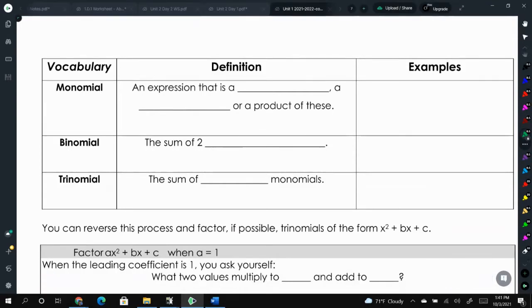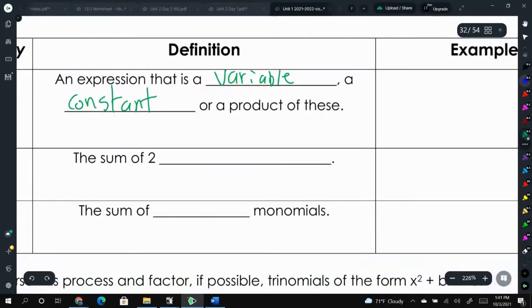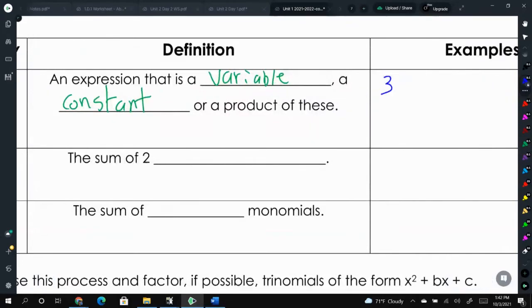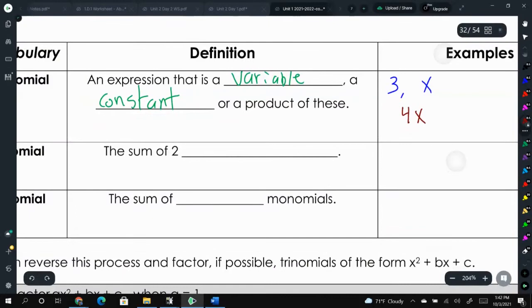A monomial is an expression that is a variable, a constant, or a product of these. For example, 3 is a constant, that is a monomial. The expression x is also a type of monomial, it's just a variable. Or you could multiply a constant and a variable, 4x, where 4 would be your constant and x is your variable. So that's the definition of a monomial.